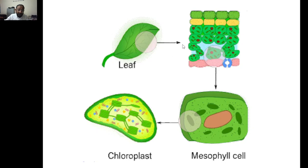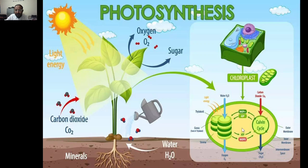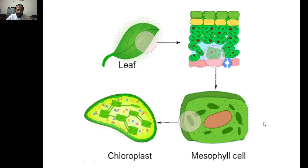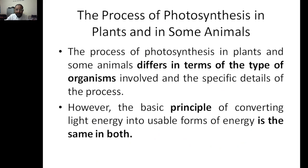This is the leaf, and these are the pigments. Every pigment has a mesophyll cell which has chloroplast, because in the chloroplast only the light-independent processes are happening. You can see the processes here.